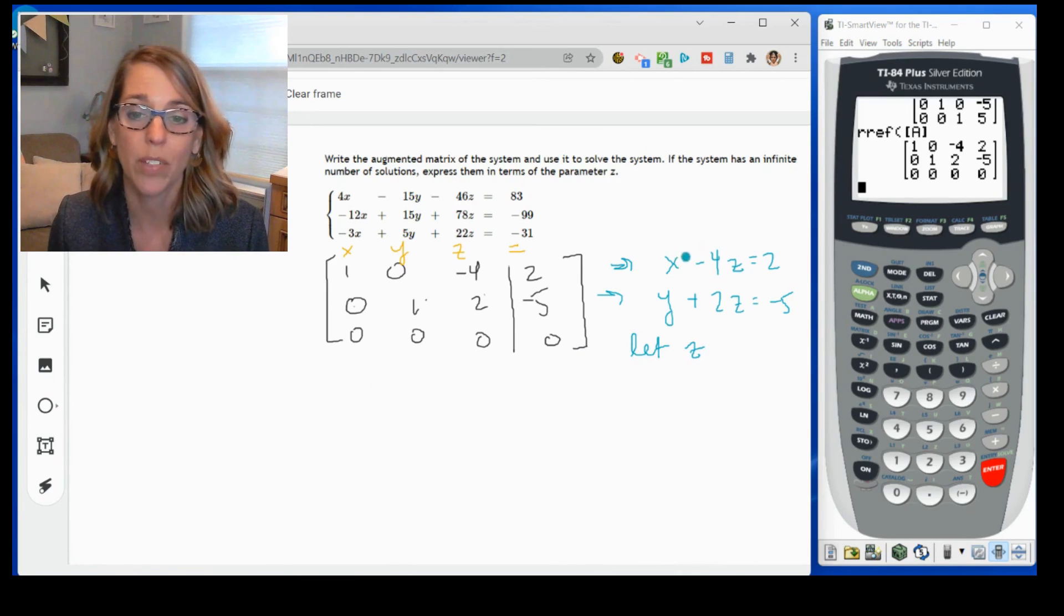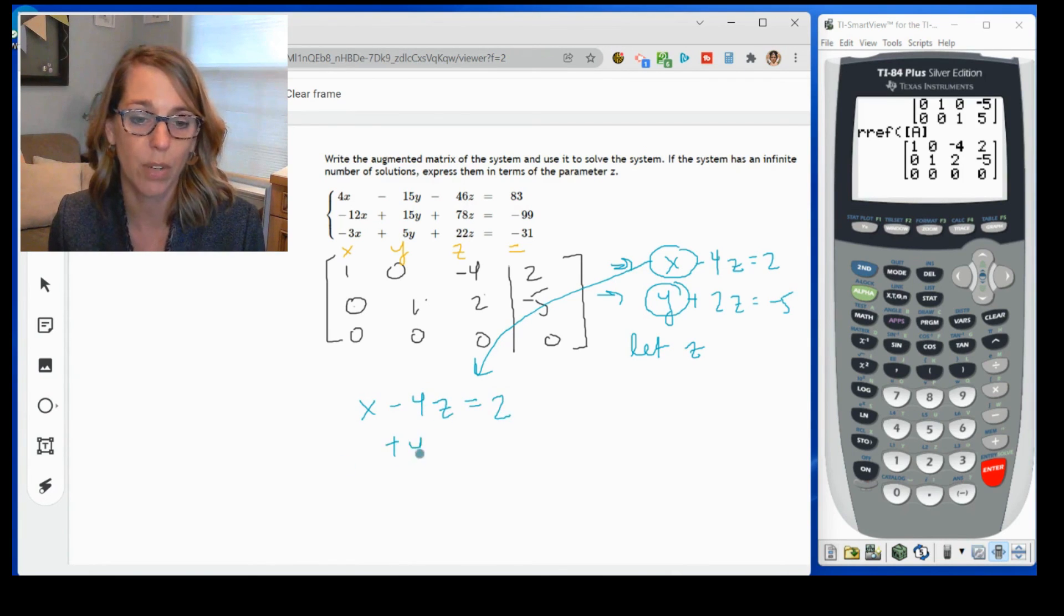And we can express our ordered triple by solving for X and solving for Y. As I solve for X, so I had X minus four Z equals two. I'm just going to add the four Z to both sides. And then I end up with X is equal to four Z plus two. You can write it in the other order. That would be perfectly fine.